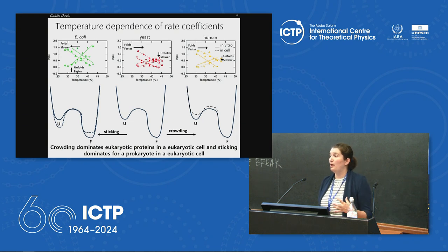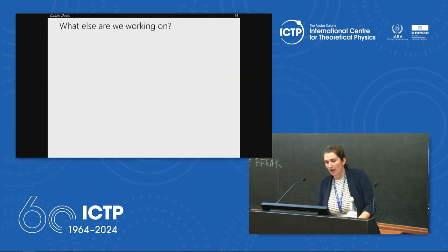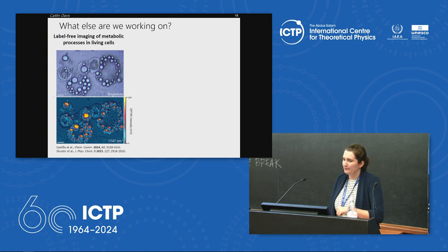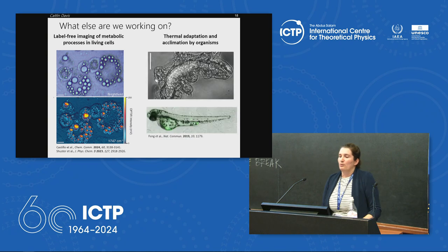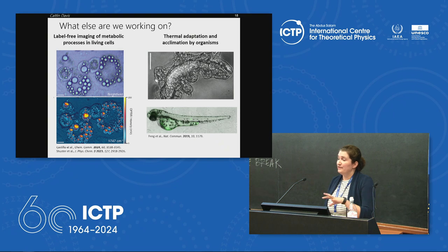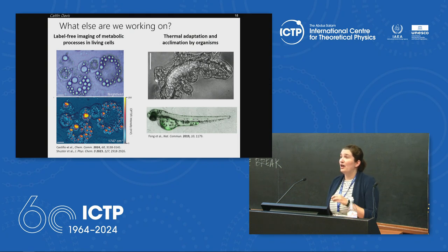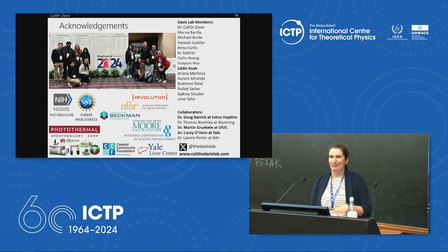We are also developing super-resolution infrared imaging techniques to track metabolic processes in cells, including studies of de novo lipogenesis in fat cells. We study thermal adaptation in organisms such as tardigrades — which survived five mass extinction events — and zebrafish — which survive from 0 to 40°C — to understand how they protect proteins in their native environment. Thank you for your attention.